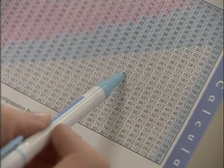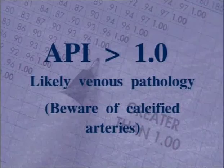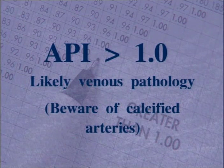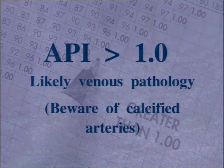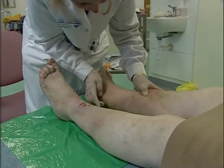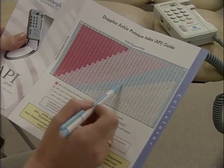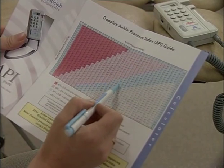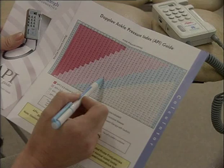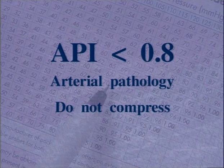If the API is greater than 1, then it's most unlikely that the patient has arterial pathology. If an ulcer is present, it's probably venous in origin. Beware of falsely high readings due to calcified arteries, which may be present in patients with a history of diabetes. If the reading is between 0.8 and 1, there's an indication of some degree of arterial disease. If it's less than 0.8, the patient has significant arterial disease.